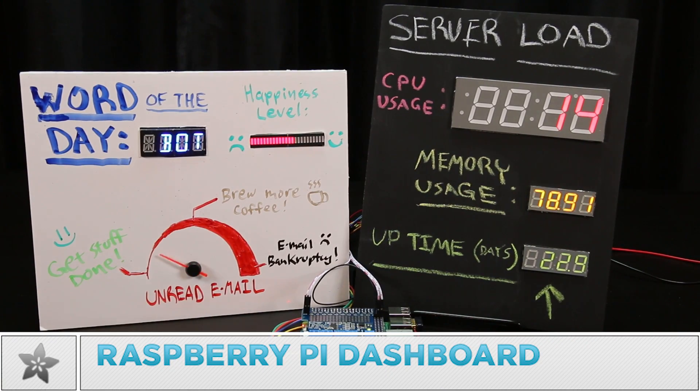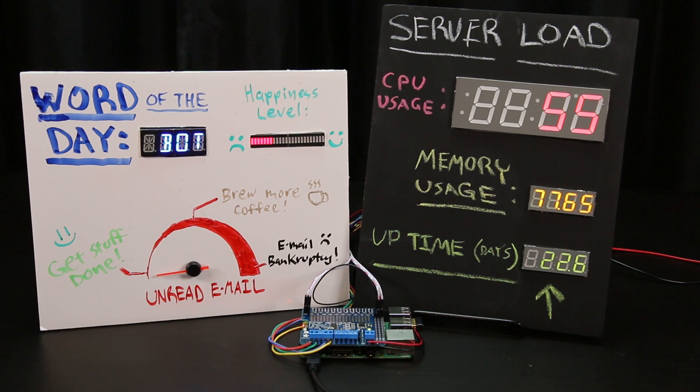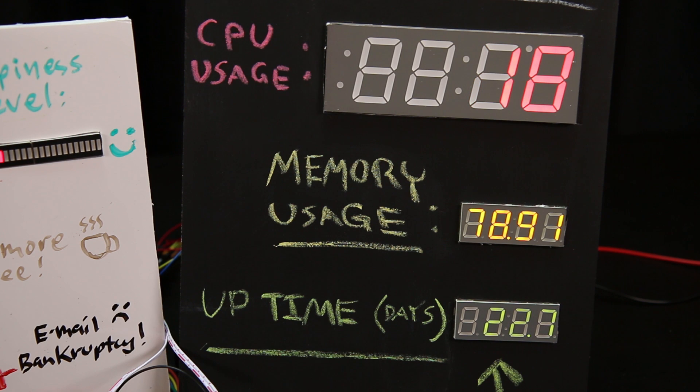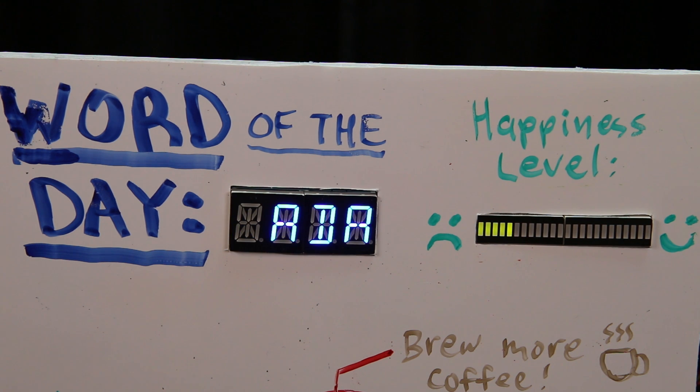This is the Raspberry Pi physical dashboard project to visualize metrics using gauges and LED displays. The Pi can drive seven segment displays that display simple numeric data like for monitoring a computer. Alphanumeric displays and bi-color bar graphs can show other interesting data too.